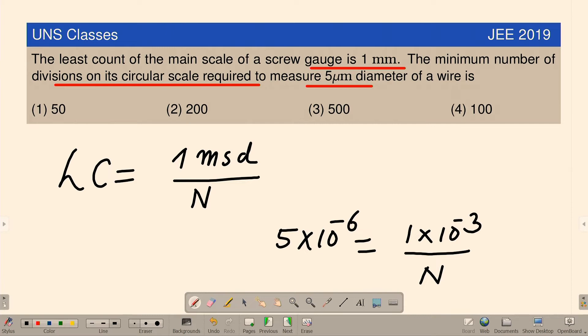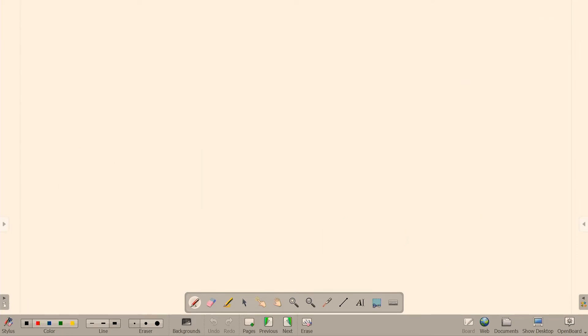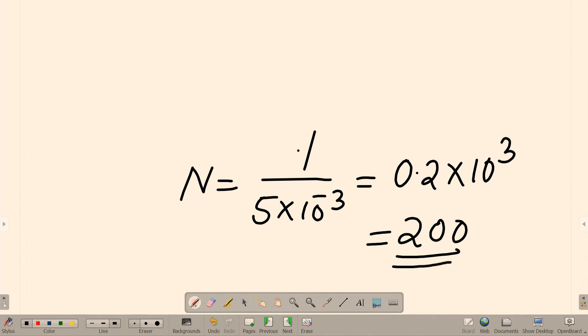So N will be equal to, we can cancel out 10 to the power 3. Minus 3 will come. Or N will be 1 by 5 into 10 to the power 3. So N will be equal to 1 by 5 into 10 to the power minus 3. This is equal to 1 by 5, 0.2 multiplied by 10 to the power 3. How much will come? 200. The number of divisions required is 200.